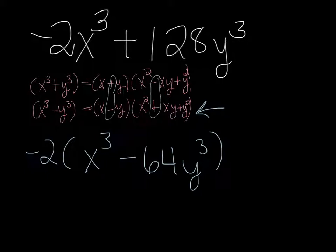x is being cubed, so x is going to be one of your terms, and then the other thing being cubed, or basically you're trying to find the cube root of each piece. So the cube root of x cubed is x, and the cube root of 64y cubed is 4y. So those are the pieces that you need for the formula.